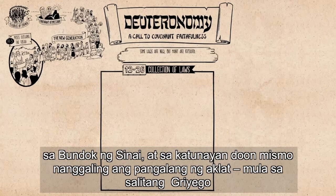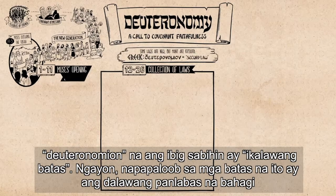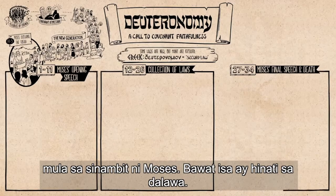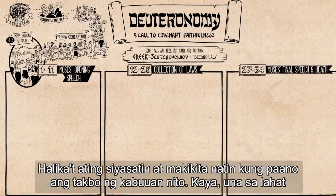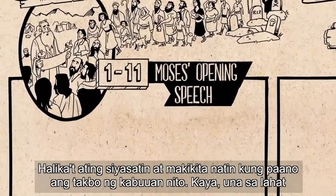That is actually where this book gets its name — from a Greek word, Deuteronomion, which means 'a second law.' Surrounding these laws are two outer sections of Moses' speech, each of which are broken up into two parts themselves. Let's dive in and see how this whole thing works.